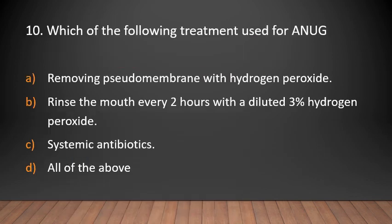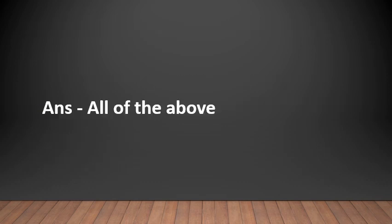MCQ 9: Which of the following treatments are used for ANUG? Removing pseudomembrane with hydrogen peroxide, rinsing the mouth every hour with diluted 3% hydrogen peroxide, systemic antibiotics, or all of the above? Answer: All of the above.